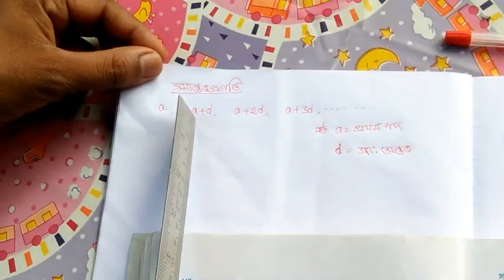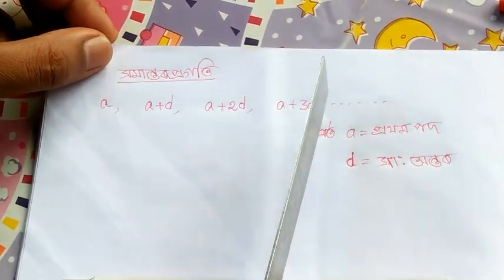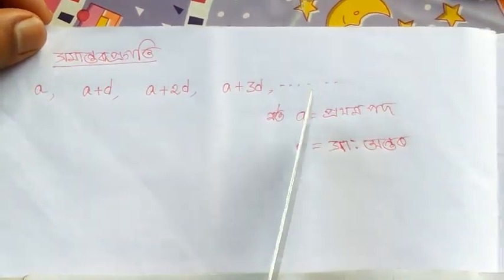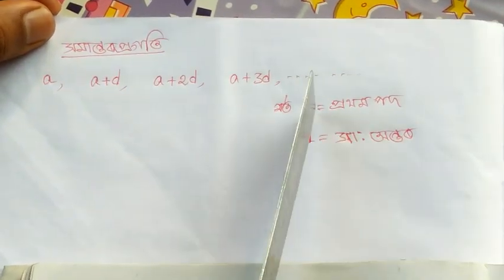The general terms of an arithmetic progression are: a, a plus d, a plus 2d, a plus 3d. Here is the common difference.